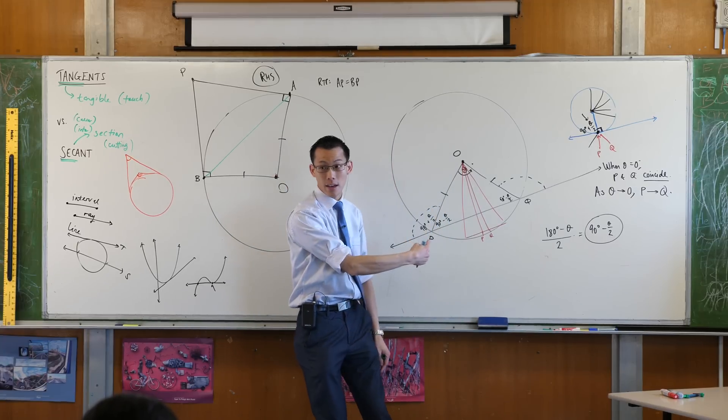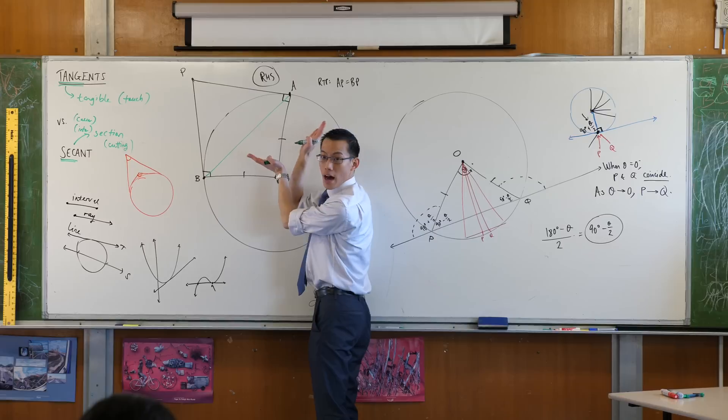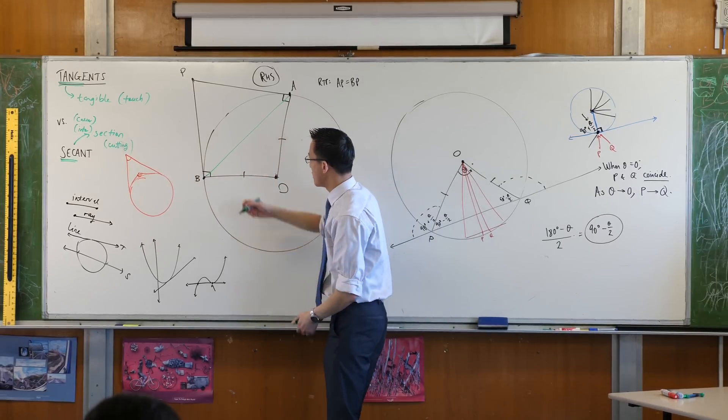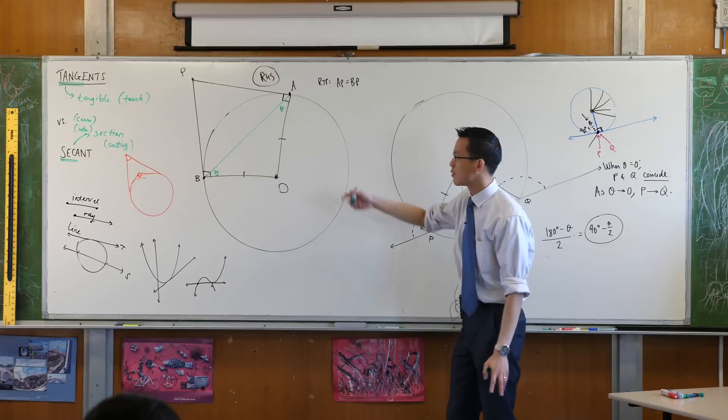Then just like over here, you created not congruent triangles, but an isosceles triangle at least over here, right? Which means if I call this guy say theta and this theta, because they're equal, right?